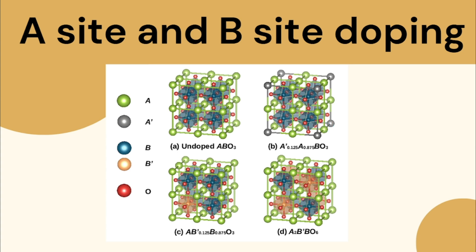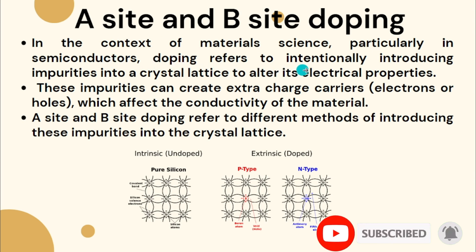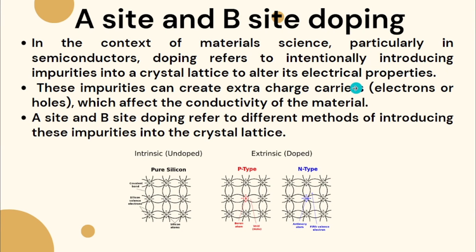Welcome to my channel. In this video I am talking about what is A-site and B-site doping. In the context of material science, doping refers to intentionally introducing impurities into a crystal lattice to alter its electrical properties and some other properties like magnetic and mechanical properties. These impurities can create extra charge carriers like electrons or holes, which affect the conductivity of a material.